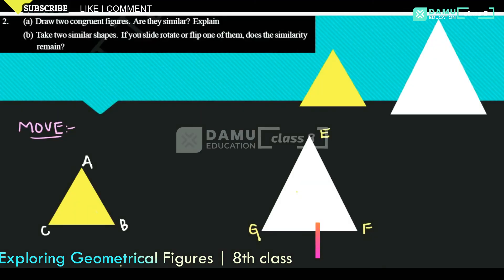Hello viewers, thanks for watching our videos. The second question asks: take two similar shapes. If you slide, rotate, or flip one of them, does the similarity remain the same? I took two triangles with similar shapes.